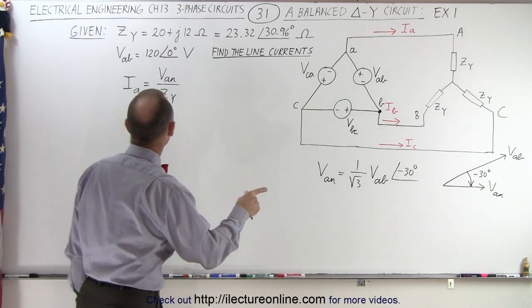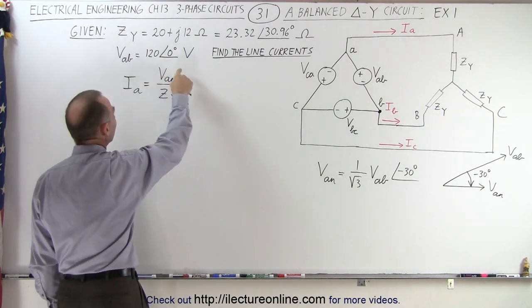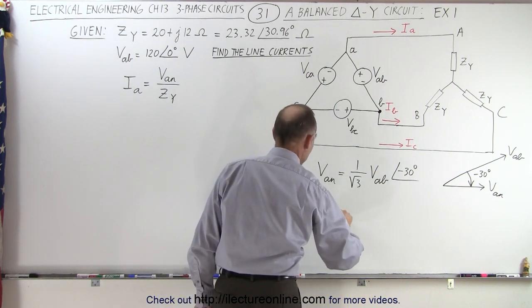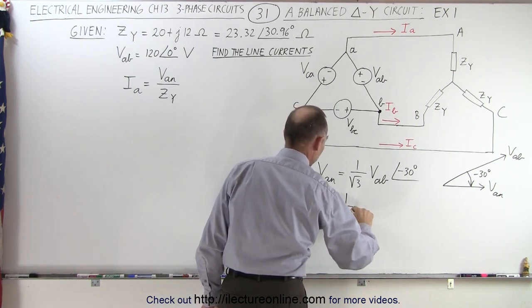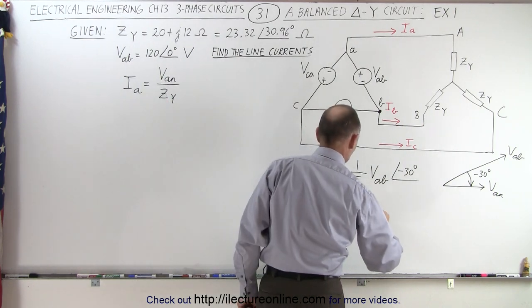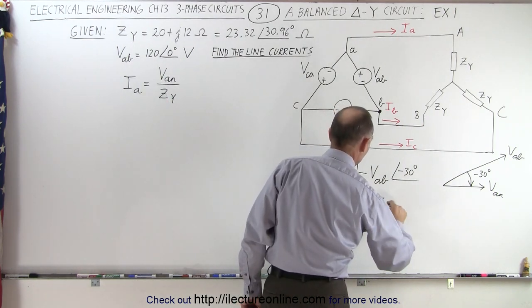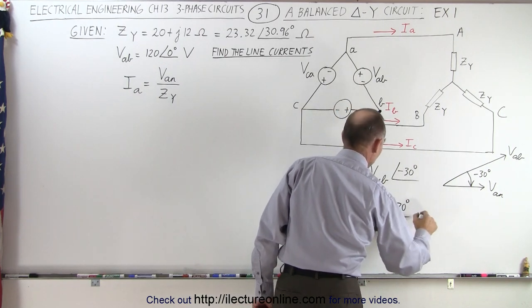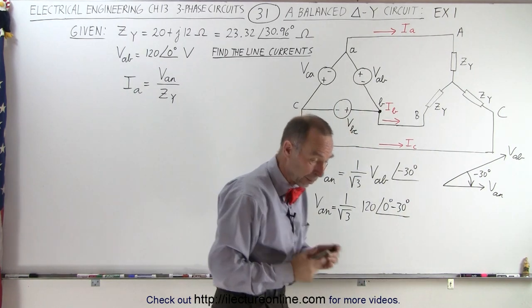So what we're going to do then is we're going to take our voltage Vab and convert that using that equation. So we have Van is equal to 1 over the square root of 3 times Vab, which is 120 with a phase angle of 0 degrees. And now we're supposed to subtract 30 degrees from that.